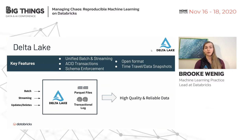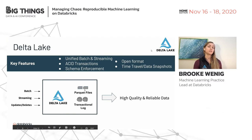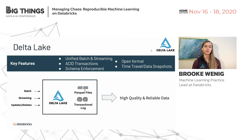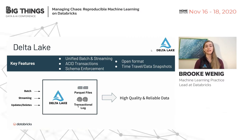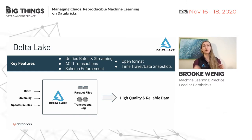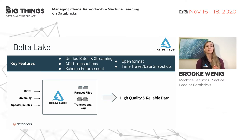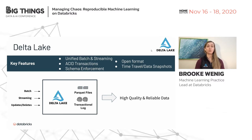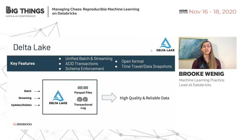Delta Lake solves this by leveraging two key facets: all data is stored in Parquet files — a scalable storage solution — and it uses a transaction log to manage all commits to the underlying data. Whenever you read from Delta Lake, it first checks the transaction log for the last committed state. This guarantees that even if a write failed partway through, that transaction was not committed, so you don't accidentally read partially committed files.